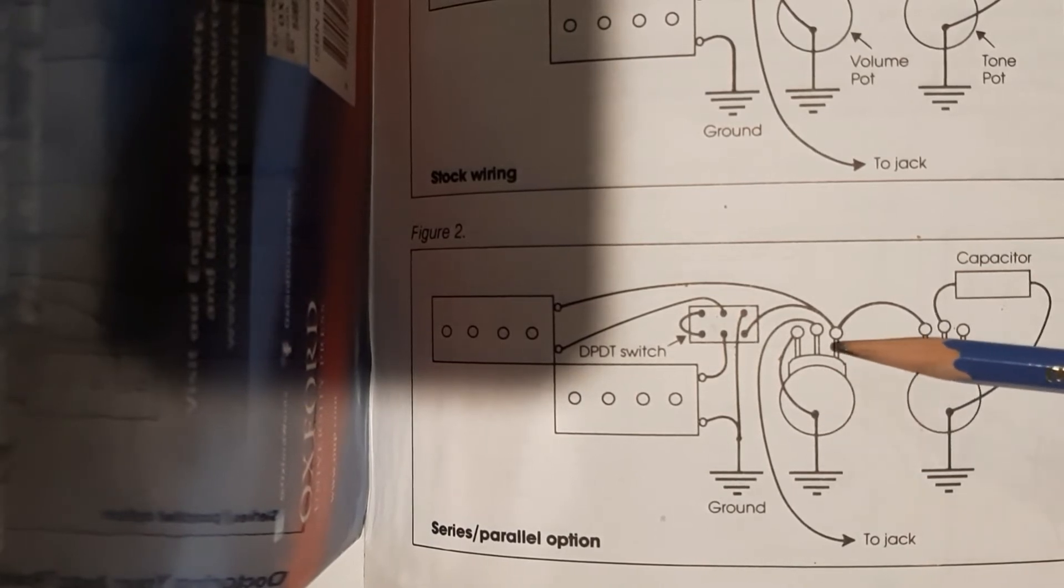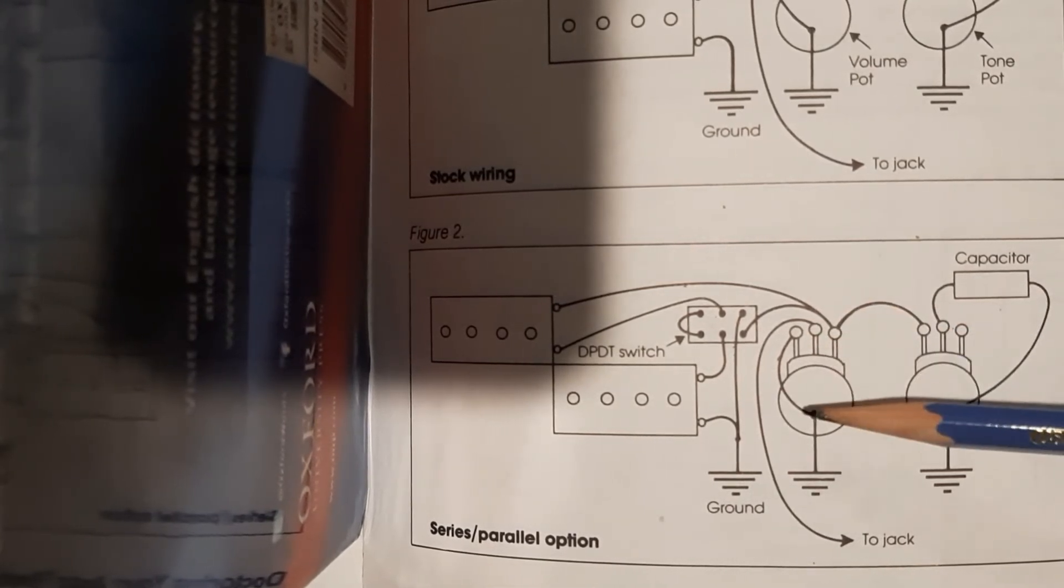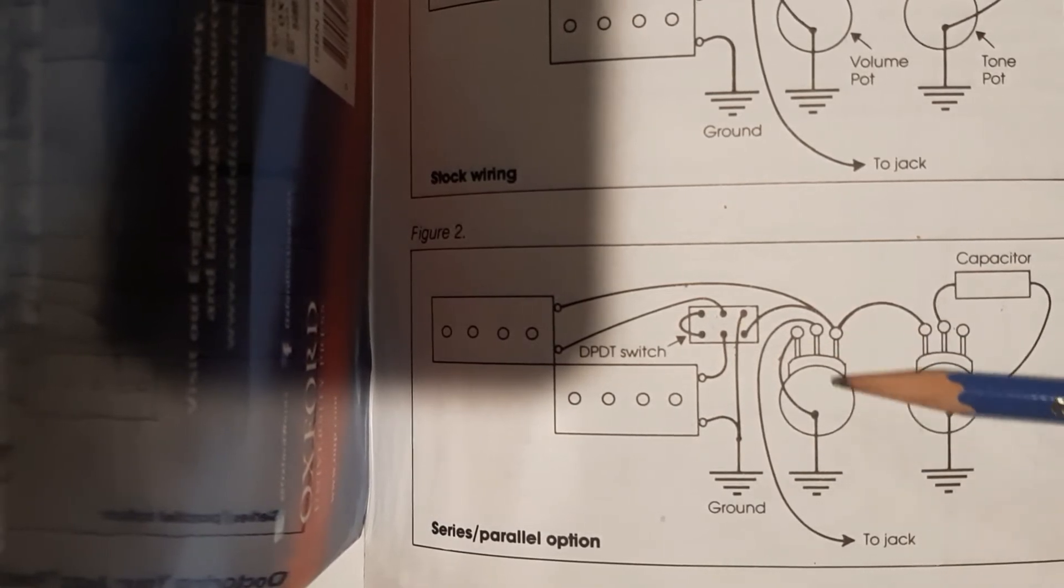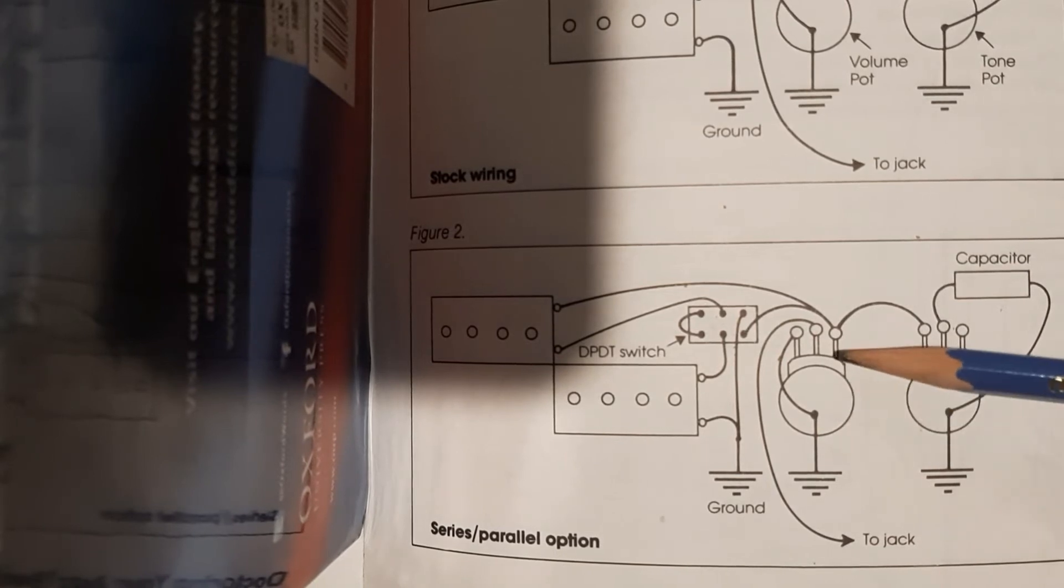On a humbucker you need a little more resistance or you'll bleed off too much, you'll bleed off even more of the high end. With a one meg pot you're putting even more resistance in the circuit, so more of your high end is going to get through and go to the output jack.